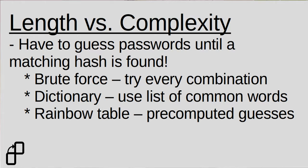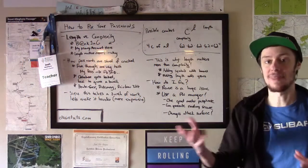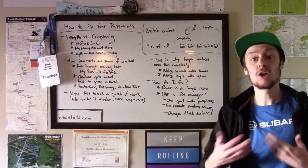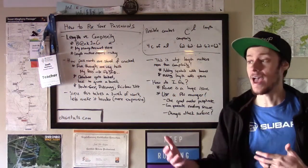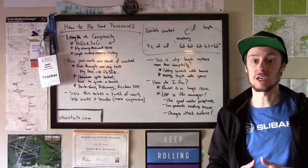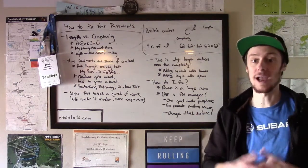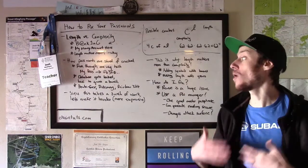So for example, if they leak a database and it has FB3F0 in that password database, they're going to use a computer and oftentimes a computer using a GPU or a server form to do a bunch of guesses.